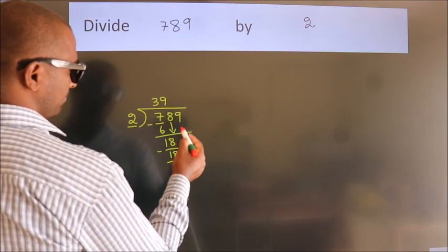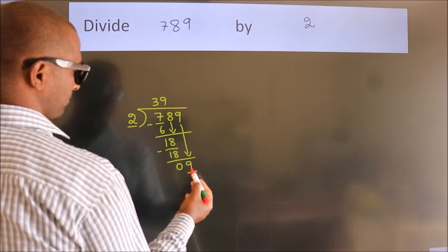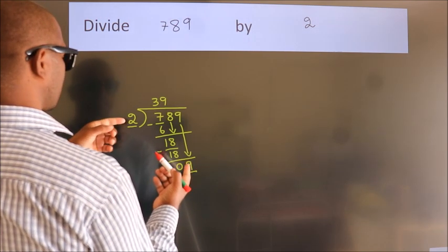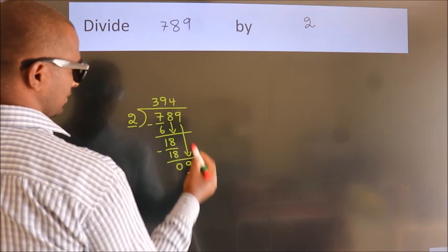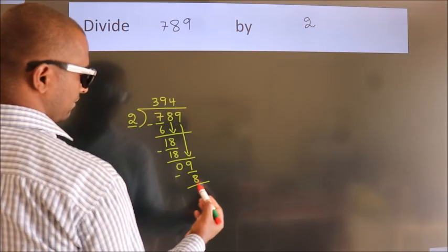After this, bring down the beside number. So 9 down. So 9. A number close to 9 in 2 table is 2 fourths, 8. Now we subtract. We get 1.